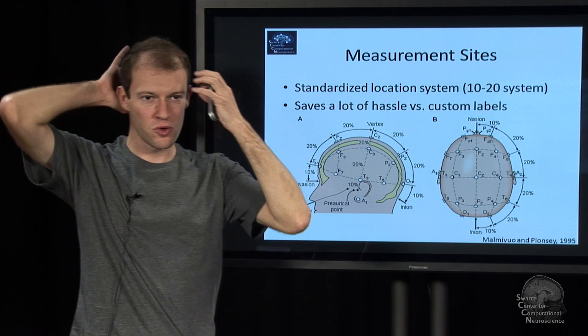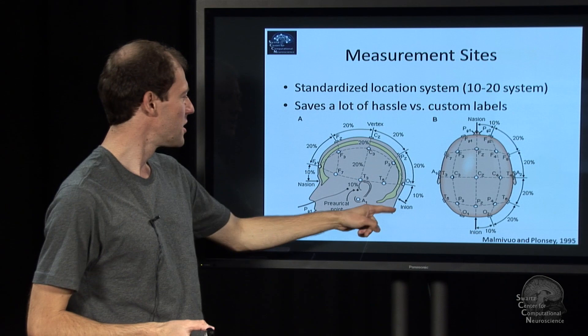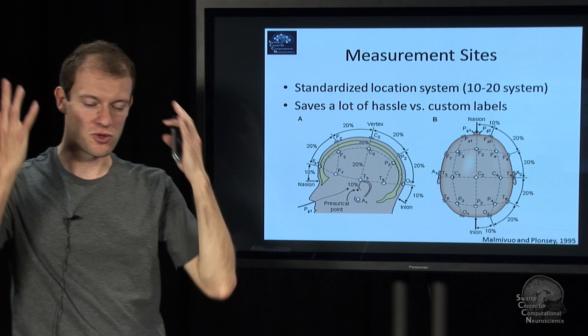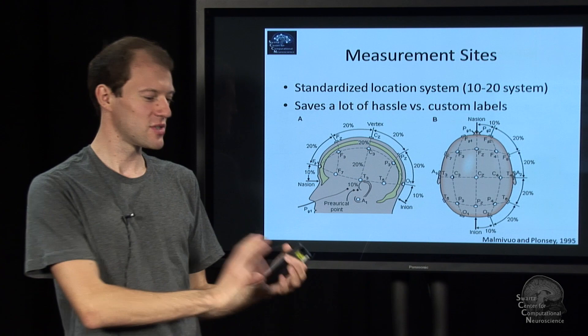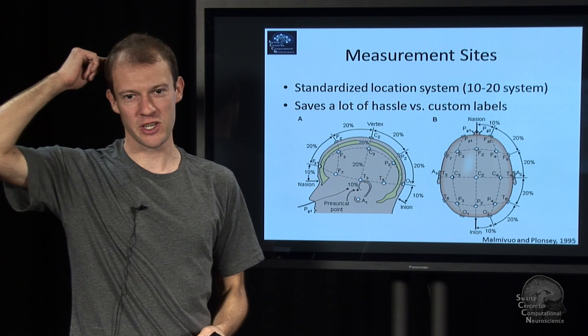There are certain landmarks, like here, the so-called nasion, the inion, which allows you to put the cap in some meaningful way. So, for example, CZ is right halfway on this path here, and that's some way to position a cap properly. And it's important to position a cap properly because you want consistency from session to session to session, of course.